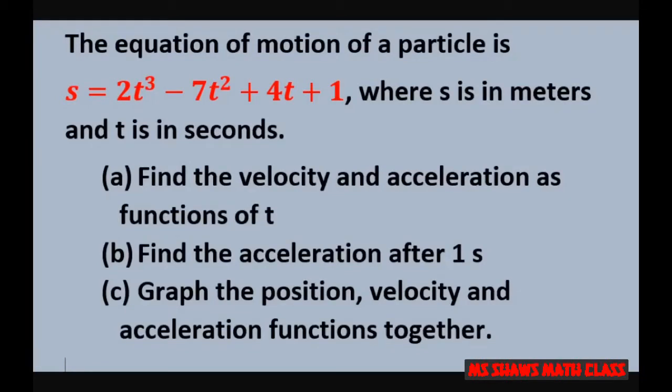Hi everyone. The equation of motion of a particle is s equals 2t cubed minus 7t squared plus 4t plus 1, where s is in meters and t is in seconds. We're going to find the velocity and acceleration as functions of t and find the acceleration after 1 second and then graph them together.